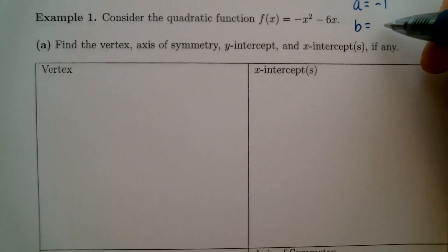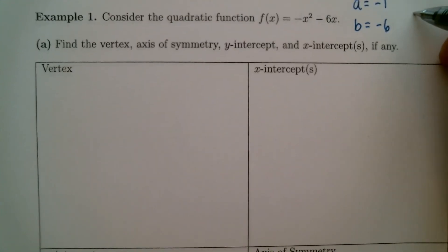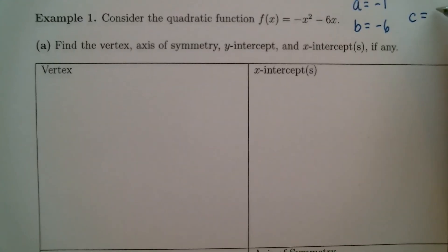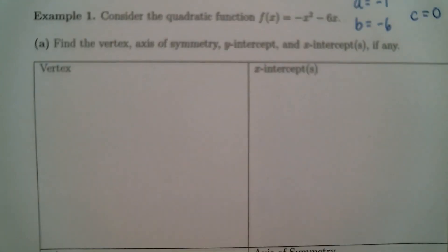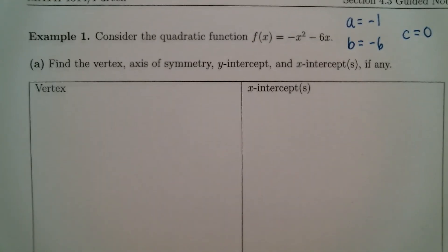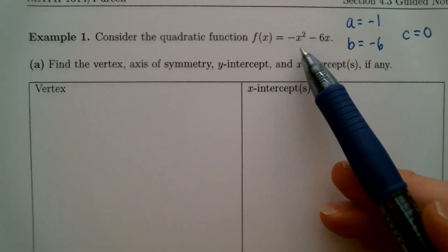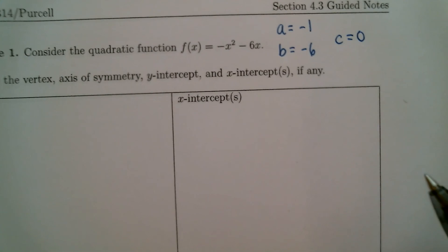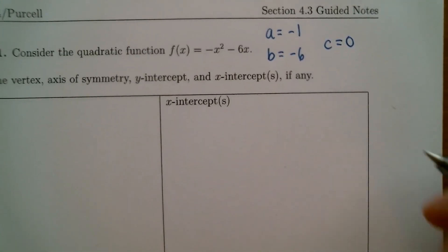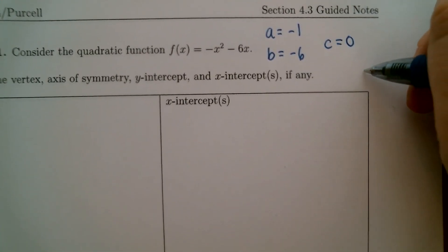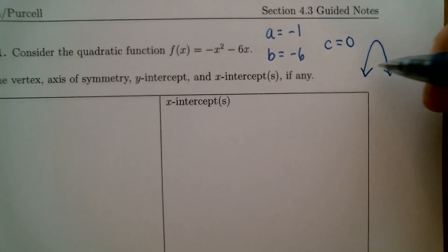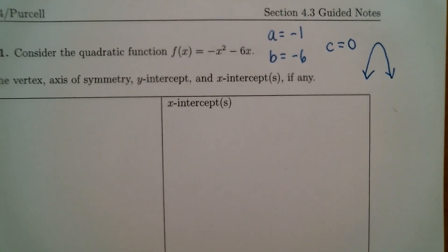The b value is negative 6 — that's the number in front of x. There is no constant value, so we say c equals 0. Also, a is a negative value, and so that means this is going to be a parabola that opens downward. So when you draw your picture, it had better look like that or you're doing something wrong.